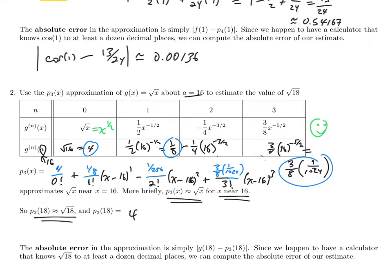So now I need to plug 18 into my polynomial that I have here. So I'll have 4, 0 factorial is 1, so 4 over 1 plus 1 eighth, 18 minus 16 to the 1st, minus, I have 1 over 256 divided by 2, so that's 1 over 512, 18 minus 16 squared. And here I have this thing now. So this will be 6 down here, and one of the 3's will cancel with that.